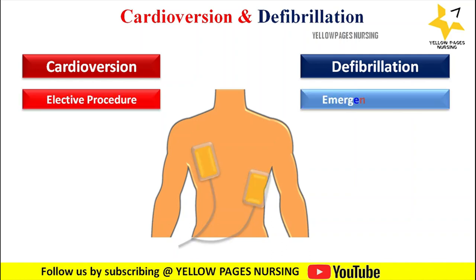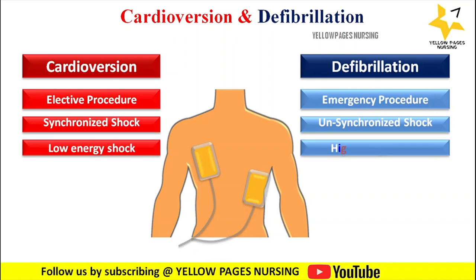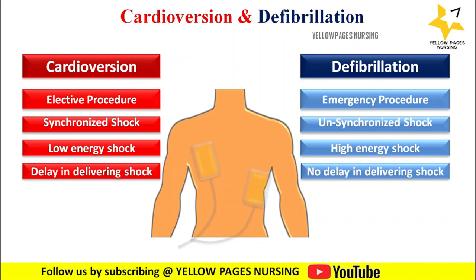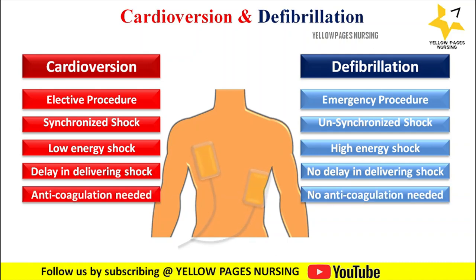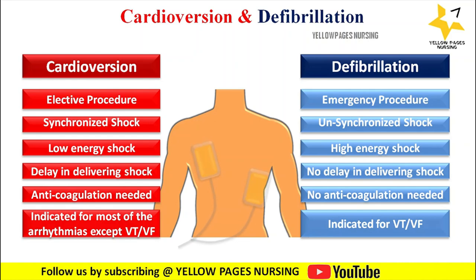Cardioversion differs from defibrillation in several ways. Cardioversion is an elective procedure, whereas defibrillation is an emergency life-saving procedure. In cardioversion, a synchronized shock is delivered during ventricular depolarization, whereas in defibrillation an unsynchronized shock is delivered. Cardioversion uses a low energy shock ranging between 50 to 300 joules depending on the indication, whereas defibrillation uses a high energy shock. There is a delay in delivering the cardioversion shock since it must align with ventricular depolarization, whereas defibrillation has no delay. Anticoagulation is needed for cardioversion but not for defibrillation. Cardioversion is indicated for most arrhythmias except ventricular tachycardia and ventricular fibrillation, whereas defibrillation is indicated for ventricular tachycardia and ventricular fibrillation.